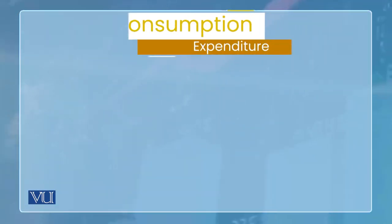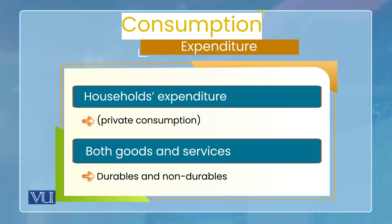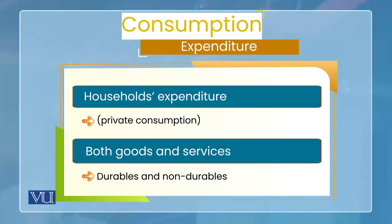तो पहला component है consumption expenditure। हम clear करना चाहते हैं कि ये कौन सा consumption है — तो याद रखें, ये consumption households का है। जो आम private sector में, जो आम families हैं, जो आम घराने हैं, जो लोग हैं — उनके consumption को हम consumption expenditure में count करते हैं। उनके जितने expenditure होते हैं एक साल के दौरान, हम उसे aggregate demand में consumption के head में count करते हैं। इसका मतलब है ये private sector का consumption होगा।